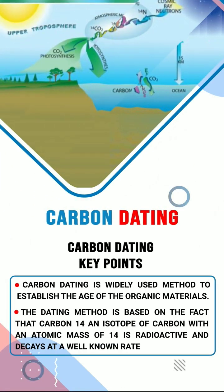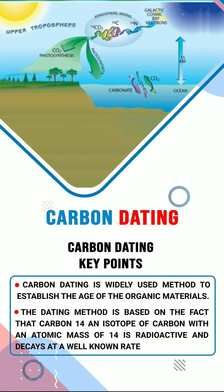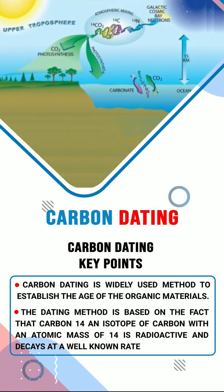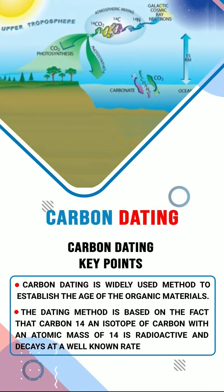Carbon dating is a widely used method to establish the age of organic materials. The dating method is based on the fact that carbon-14, an isotope of carbon with an atomic mass of 14, is radioactive and decays at a well-known rate.